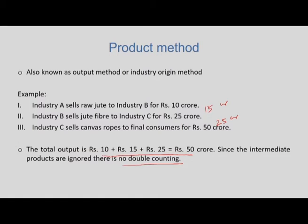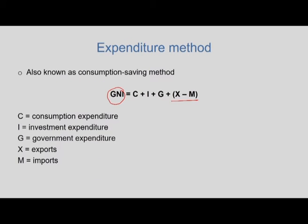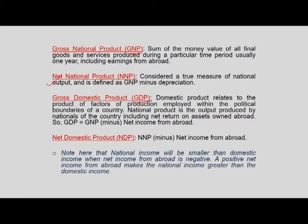I explained the product method using an example of three industries — two producing intermediate goods and one producing a final good — showing how intermediate products are excluded to avoid double counting. The income method shows the distributive shares of different factors of production. The expenditure method sums all expenditures: consumption, investment and government expenditure including net exports minus imports. After reviewing all three methods, I introduced the definitions of GNP, NNP, GDP and NDP.